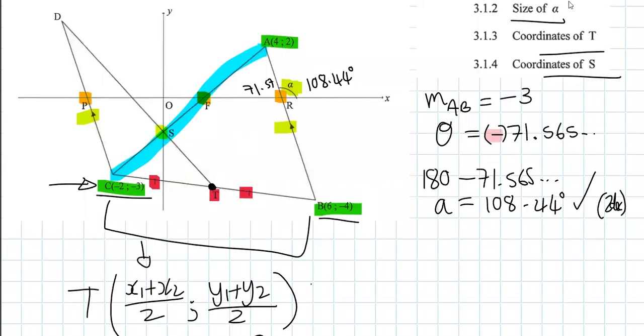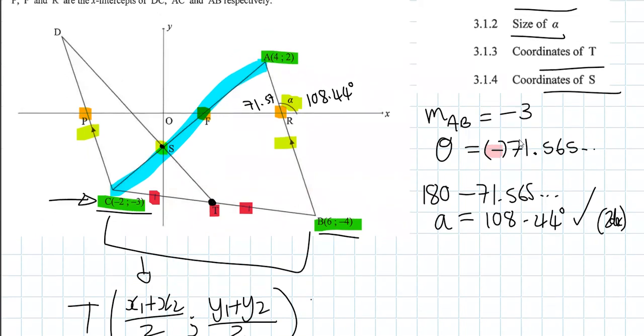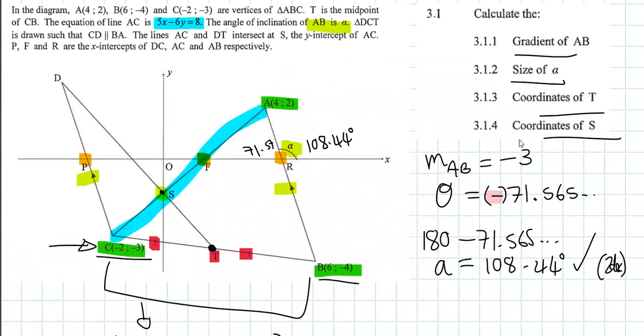Number 3.1.4: calculate the coordinates of S. S is our Y-intercept of AC, of that blue line which was given. We had it highlighted there: 5X minus 6Y equals 8, highlighted in blue. That's already useful information.